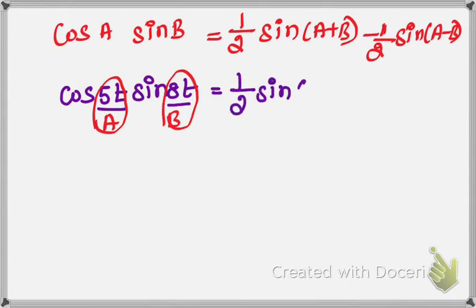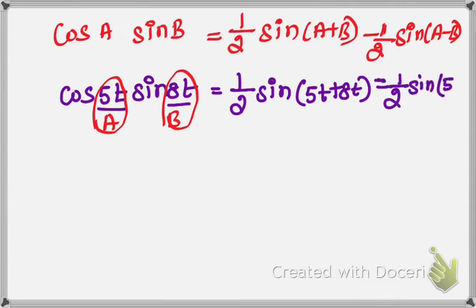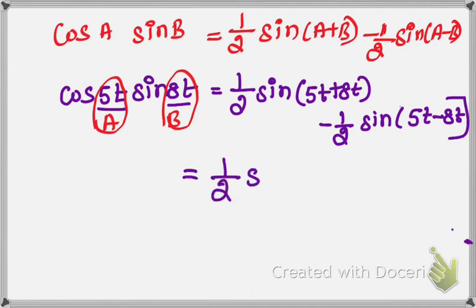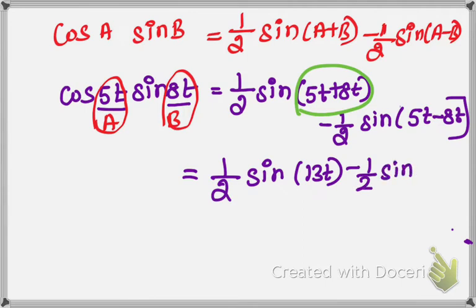We get one-half into sin(A plus P) minus sin(A minus P). Substituting our values: 5t plus 8t gives 13t for the first term. For the second term, 5t minus 8t gives minus 3t, because 5 minus 8 is minus 3, so the answer is minus 3t.